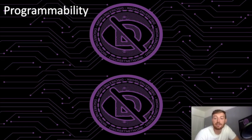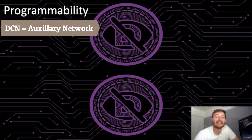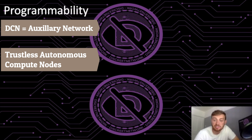Discreet provides an auxiliary decentralised network called the Discreet Compute Network, or DCN. This helps perform complex tasks like lending, auctions, e-voting, etc. — essentially it's specifically there for executing smart contracts. This is done by special nodes called Trustless Autonomous Compute Nodes, which provide secure computational power to the DCN and receive rewards for their efforts. If one of these nodes is deemed malicious, a challenge can be issued and they can be removed.